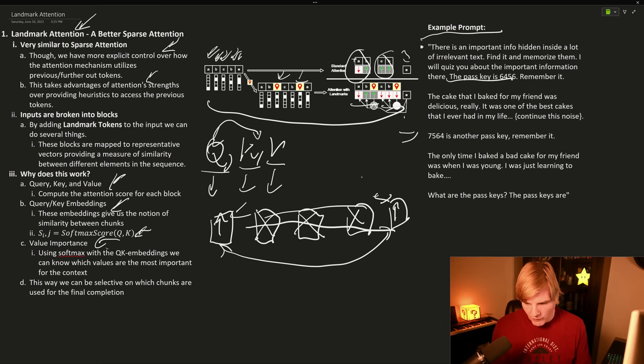So we instruct the model that there is important information hidden inside a bunch of irrelevant text, and then we give it a passkey, and then we ramble about cake, then we give it another key, then we ramble about cake again. And now these chunks of noise could be thousands and thousands of tokens.